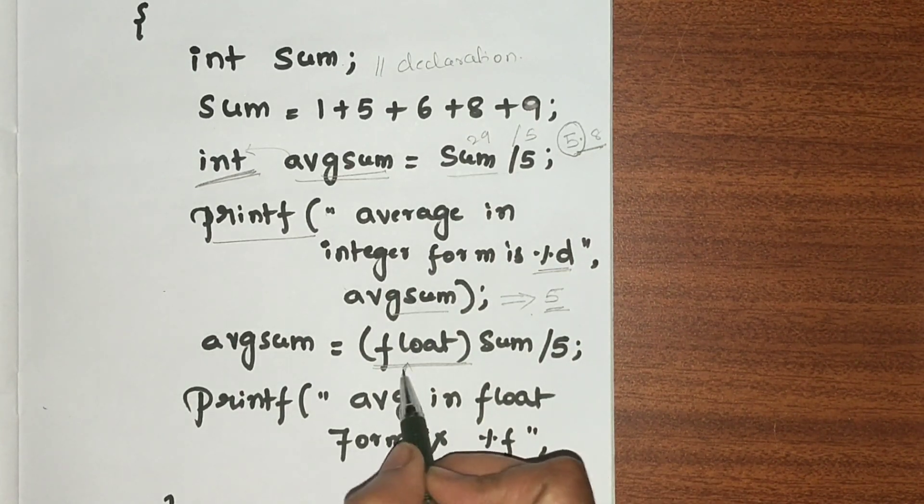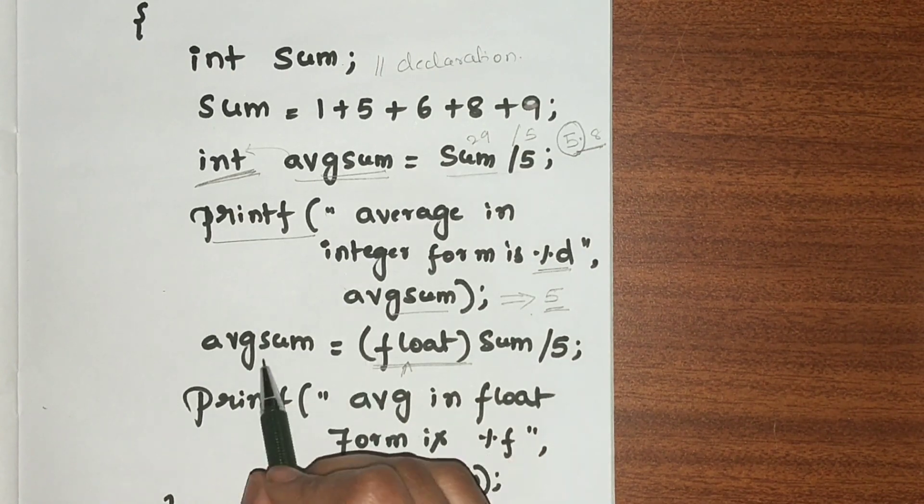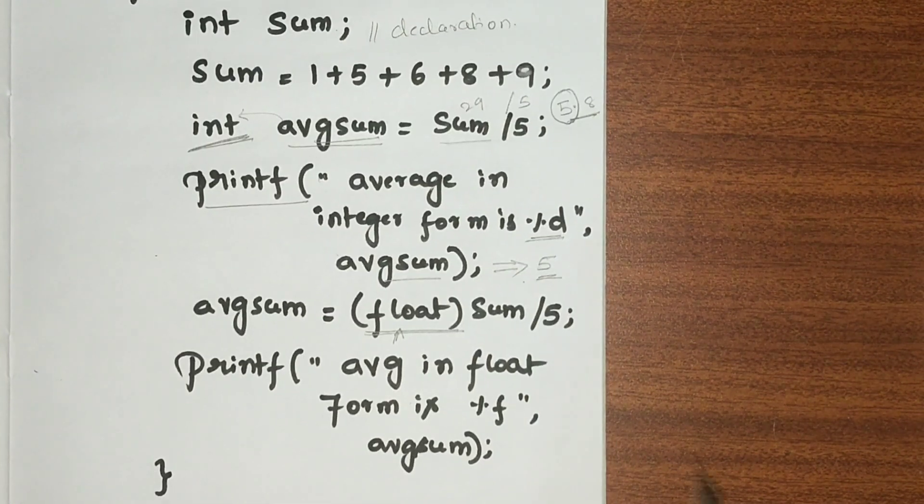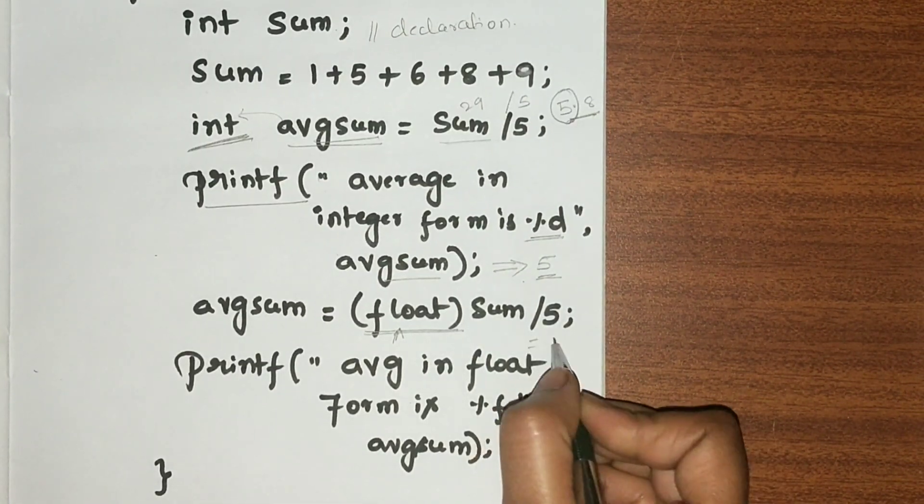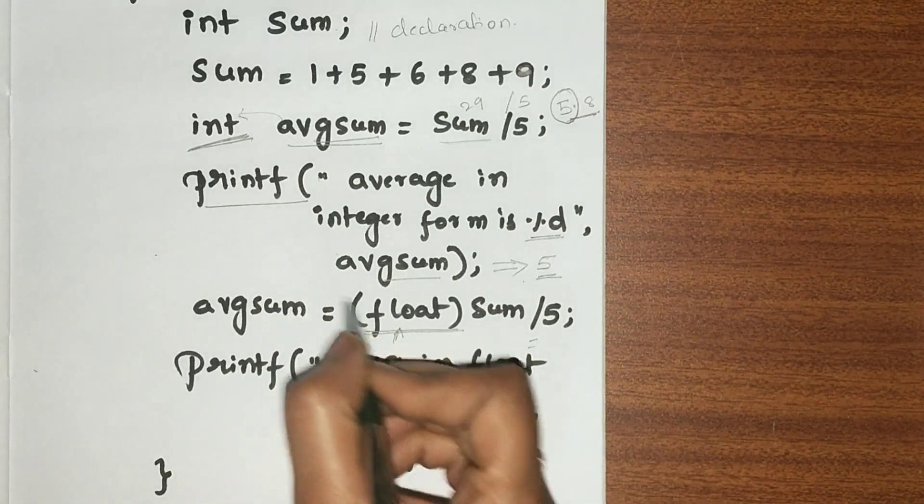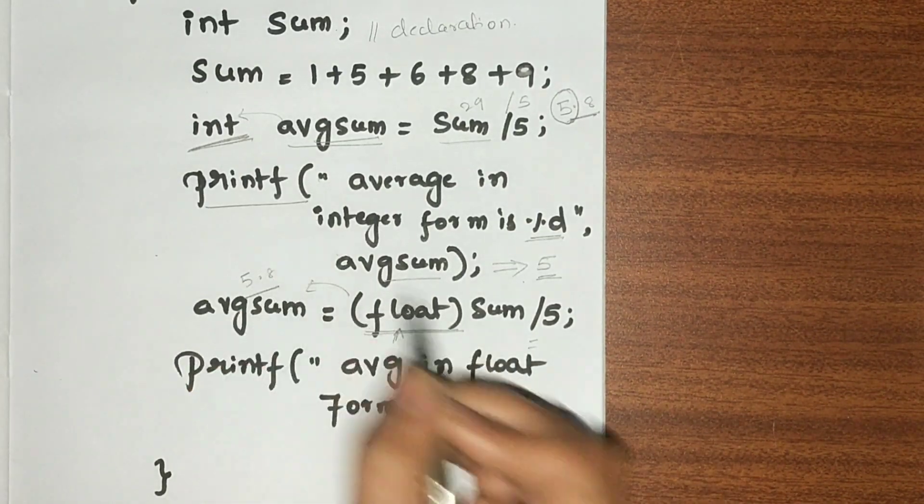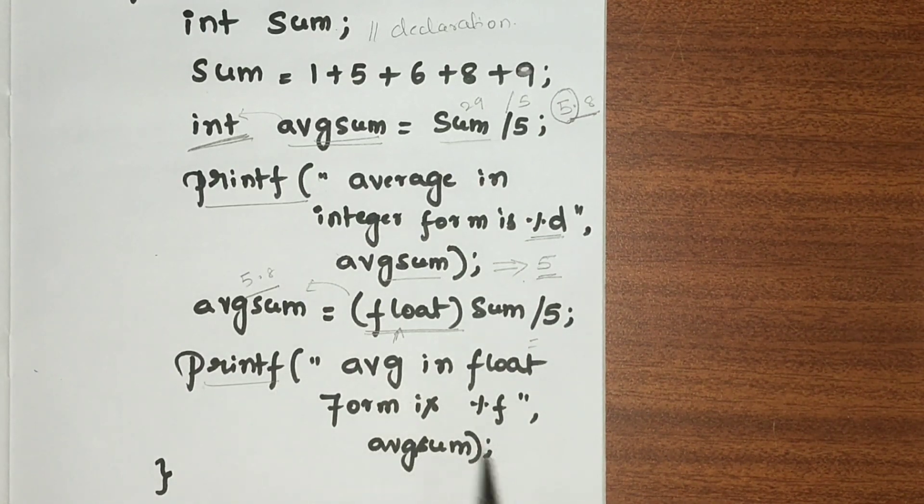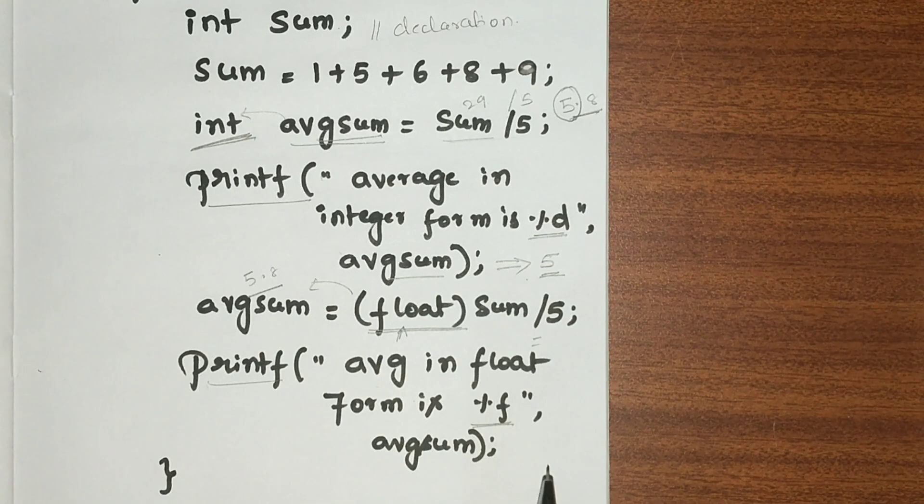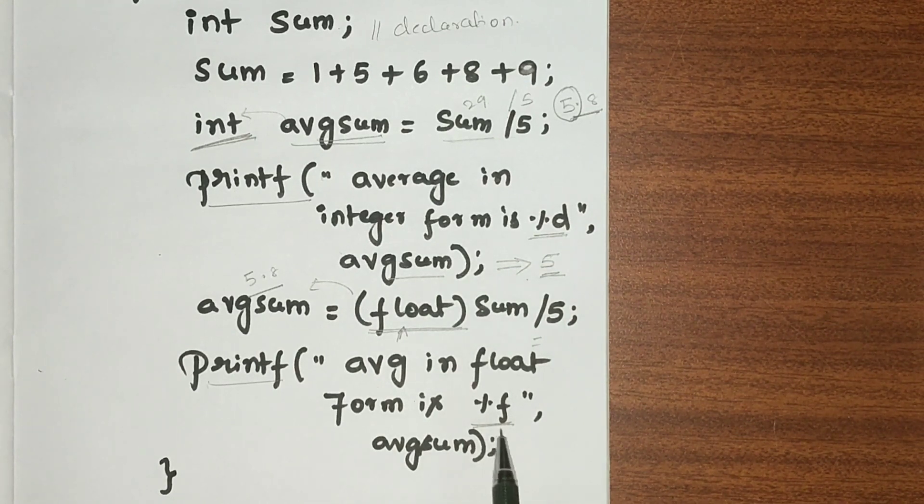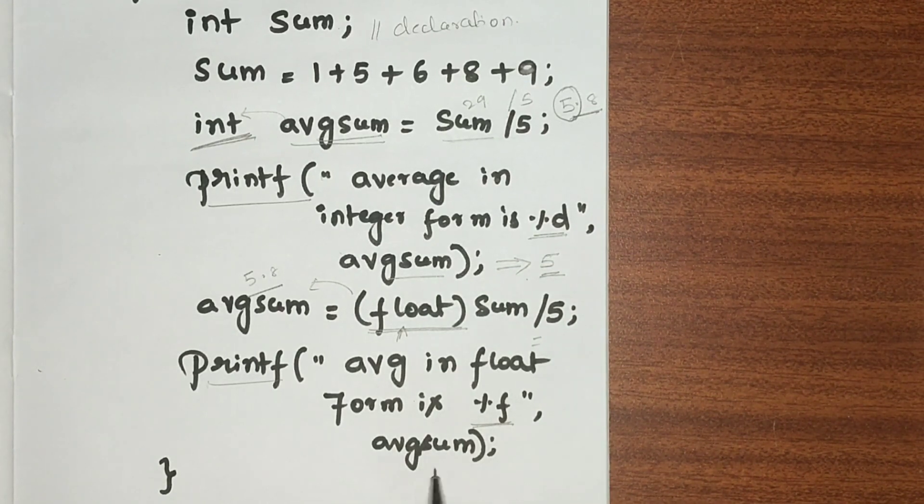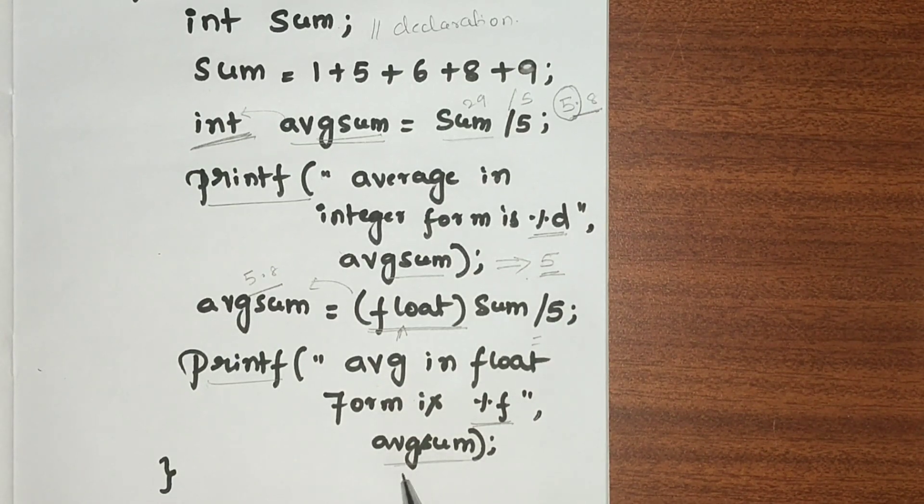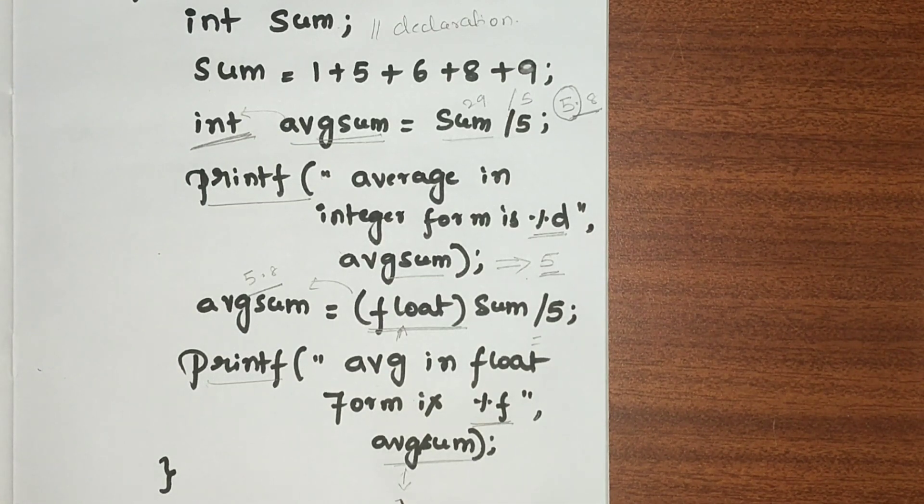In this printf statement, "average in float form", I have used %f for printing the floating point value, then comma avgsum. I should print avgsum, that's why I am putting this variable here. Now it will print 5.8 as the value, and I am closing with the closing bracket.